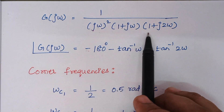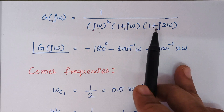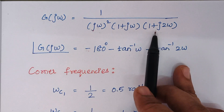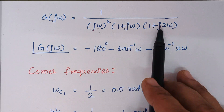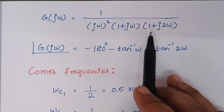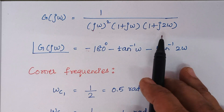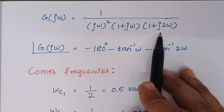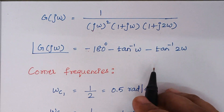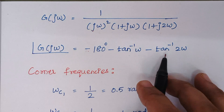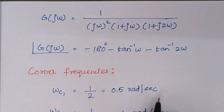For the last term, tan inverse of the imaginary coefficient 2ω divided by the real term 1. Since this is also a denominator term, when moved to the numerator, it becomes minus tan inverse of 2ω.